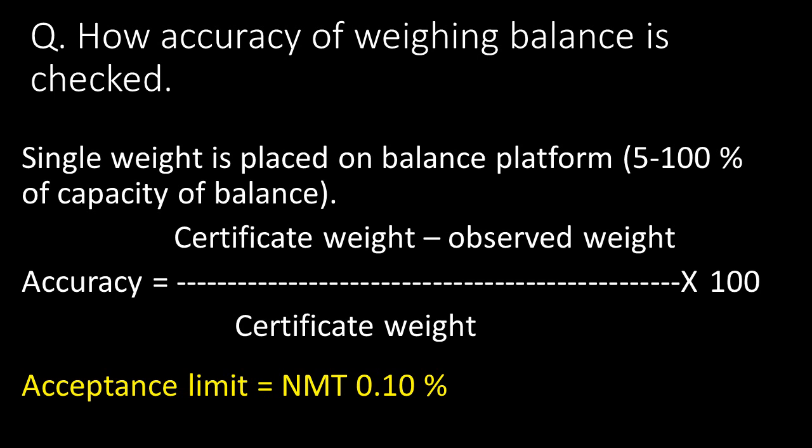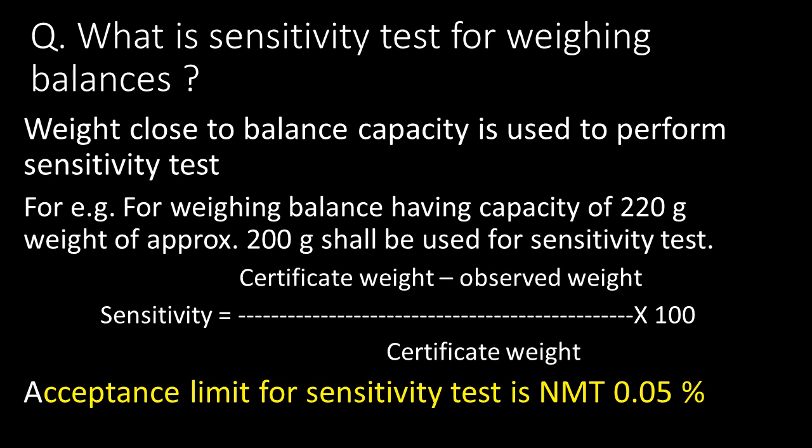How is the accuracy of a weighing balance checked? To measure accuracy, a single weight is placed on the weighing balance platform. That single weight may lie between five to one hundred percent of the weighing balance capacity. The formula for calculation of accuracy is: (certificate weight minus observed weight) divided by certificate weight, multiplied by 100. As per USP, the acceptance limit is not more than 0.10 percent.